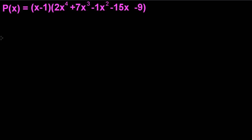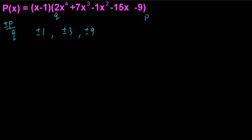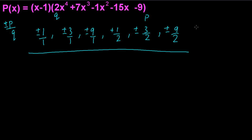We now repeat the process. We list all possible combinations of P over Q for the new polynomial. P comes from the factors of 9: ±1, ±3, and ±9; Q comes from the factors of 2: 1 and 2. So the new list of possible zeros includes ±1, ±3, ±9, ±1/2, ±3/2, and ±9/2.